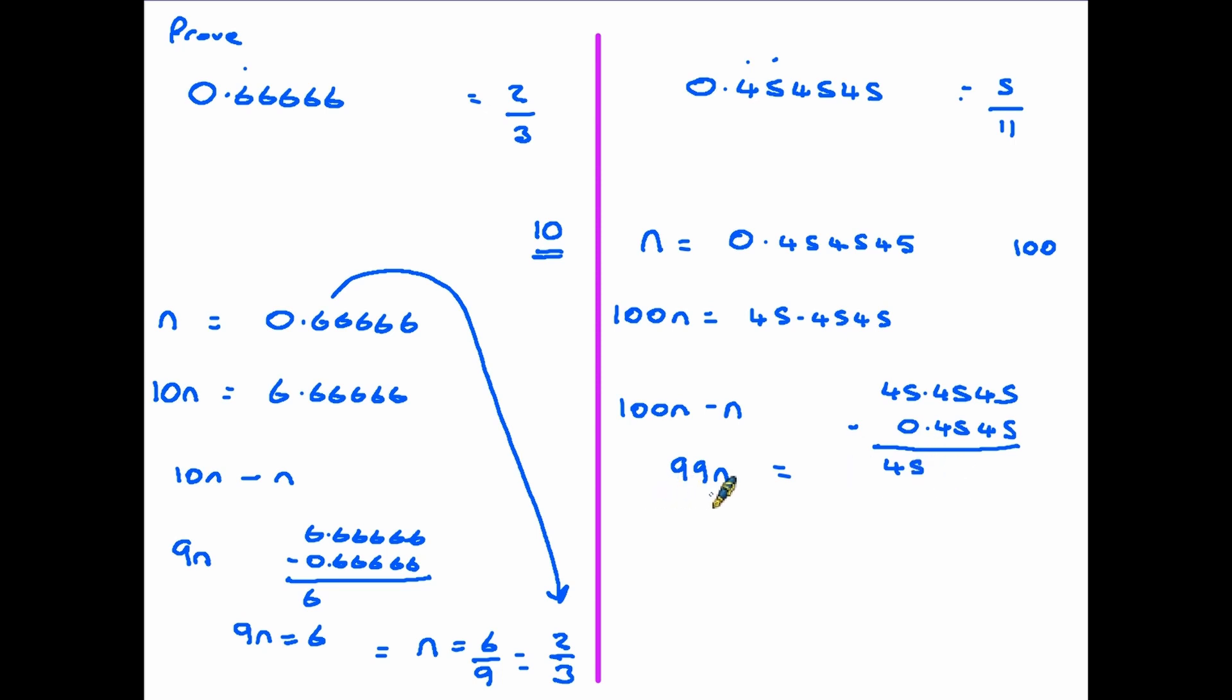So 99n is equal to 45. Again a little bit of algebra. That means that n is equal to 45 over 99. I'm going to assume at this point that you are familiar with the process of simplifying fractions. And in fact if you simplify 45 over 99 you will come to 5 elevenths. Both top and bottom will divide by 9. So again we've now proved that this decimal here is the equivalent of 5 elevenths.